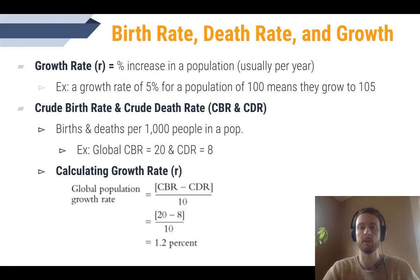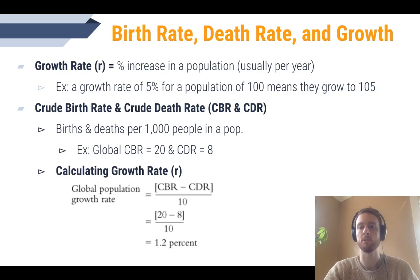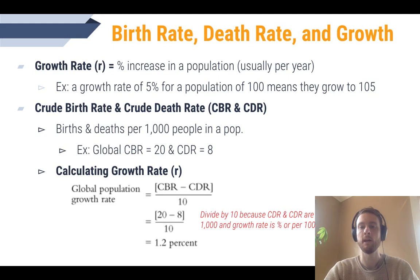Because most countries on Earth are experiencing population growth, and population size has a really significant impact on the environment, it's an important APES skill to be able to calculate the growth rate for a human population. We can do this using two measures called crude birth rate (CBR) and crude death rate (CDR), which are simply the number of births and deaths in a population per 1,000 people. We calculate the growth rate by subtracting the death rate from the birth rate and then dividing by 10, since CBR and CDR are both out of 1,000 but growth is expressed as a percent. In this example, with a global CBR of 20 and a global CDR of 8, subtracting 8 from 20 gives 12, and dividing by 10 gives 1.2, meaning Earth's global population grows by 1.2% each year.